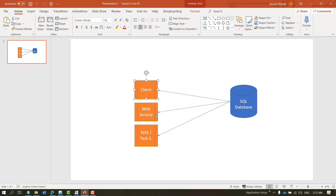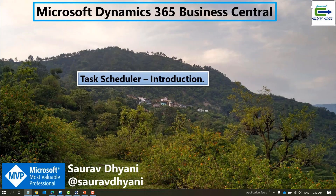I prefer to keep one service for the client session, one for web services if my customer is using web services, and then one separate service tier just for the task scheduler. That makes it easy if I have to do certain changes on the task scheduler service. If you haven't seen how to create multiple services, you can go back to the YouTube channel and find the relevant video.